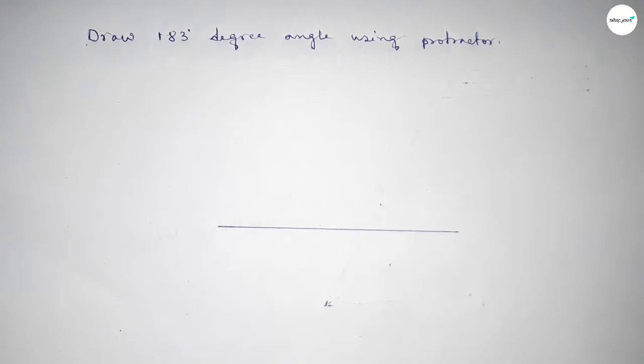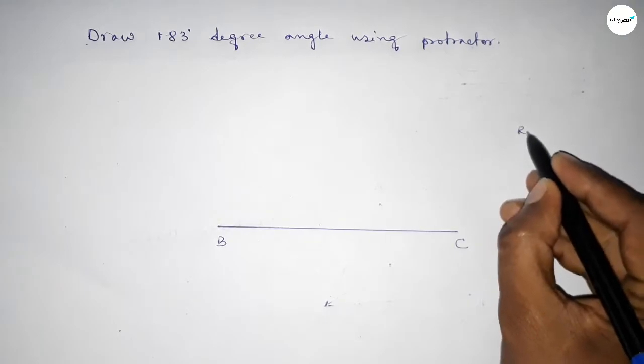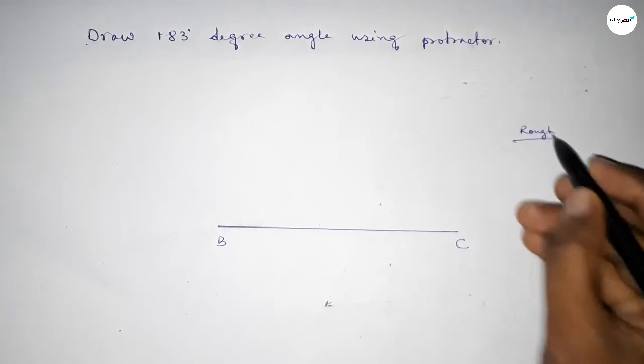So first drawing here a line, next taking here B point and here C point. Now discussing some rough space.